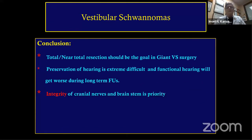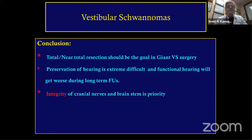In conclusion: total or near-total resection should be the goal in giant tumors. Hearing preservation is extremely difficult for giant tumors, and even in small tumors if you save hearing, the outcome on follow-up at two to three years can decline. Integrity of the cranial nerves and brainstem is the priority.